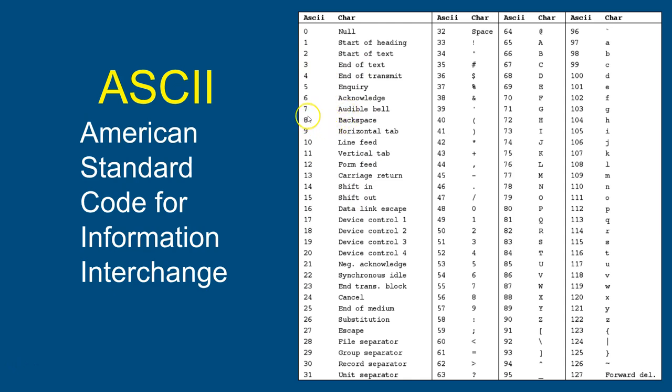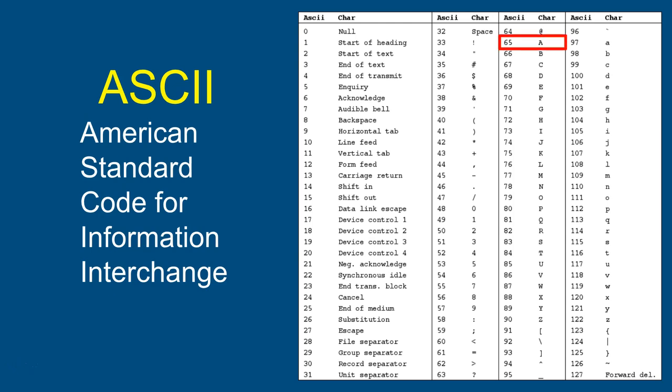Because String is a variable-length data type, there's some overhead involved. When you allocate a string variable, four bytes are immediately allocated. Then when you store something, the interpreter finds a contiguous block of memory for all the characters. The string has to start at an address and use contiguous bits of RAM - it can't skip around other allocated memory.